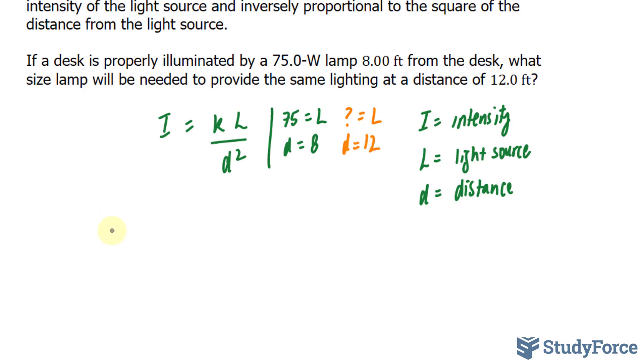Here's the first equation: the intensity of illumination equals K times 75 divided by 8 to the power of 2, which is 64.